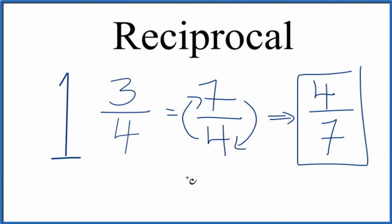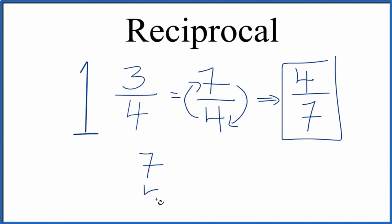And you can check your work. You could take seven over four, that's the original fraction here. And if you multiply it by the reciprocal, four over seven, you should get one.